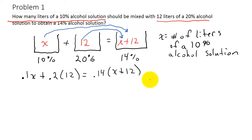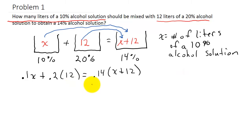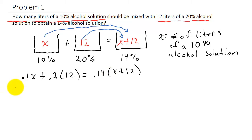To solve this, the best approach is to get rid of the decimals. You can see the decimal needs to be moved one place for 0.1, one place for 0.2, but two places for 0.14. Multiplying by 10 moves the decimal one place to the right, multiplying by 100 moves it two places. So we're going to multiply each term by 100, since the most we need to move the decimal is two places.